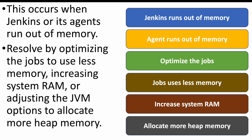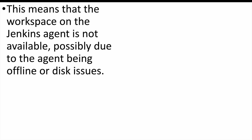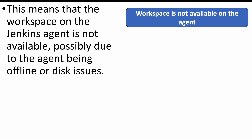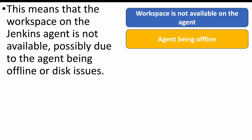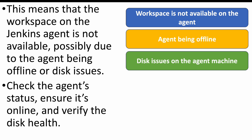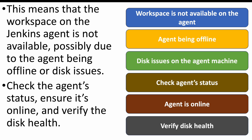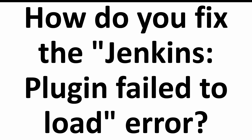The next question: what does the 'Jenkins workspace is offline' error mean and how do you troubleshoot it? This error indicates that the Jenkins agent where the workspace is located is not online — either the agent is down or there is a disk space issue. Check if the agent machine is online, verify Jenkins can connect to it, and ensure there is sufficient disk space, increasing capacity if needed.